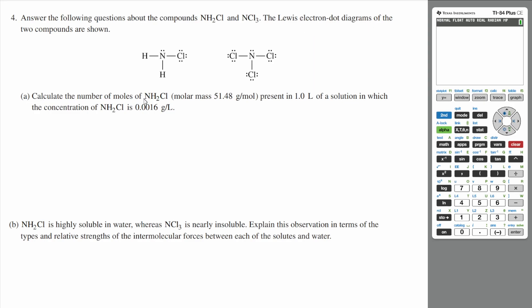Part A: Calculate the number of moles of NH2Cl, which has a molar mass of 51.48 grams per mole, present in one liter of a solution in which the concentration of NH2Cl is 0.0016 grams per liter.